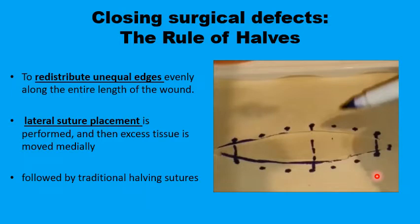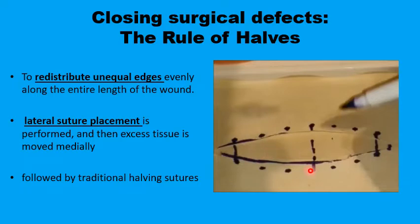With a suture at each end first, you avoid dog ears at the edges — the common site for their formation — then start in the middle and keep placing stitches midway between any two existing stitches. This achieves even distribution of sutures and tension along the entire length of the wound, with the angles already secured by the initial lateral sutures.